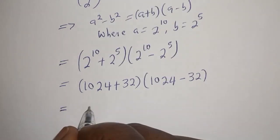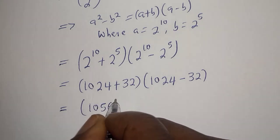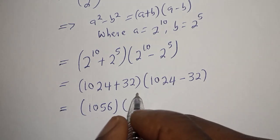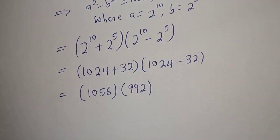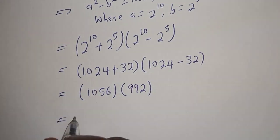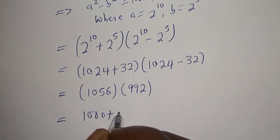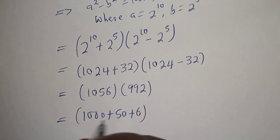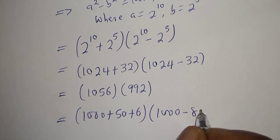1024 plus 32 equals 1056, multiplied by 1024 minus 32, which is 992.